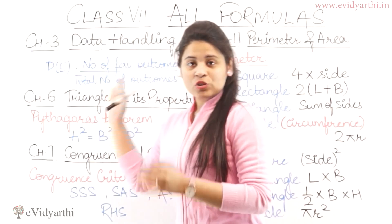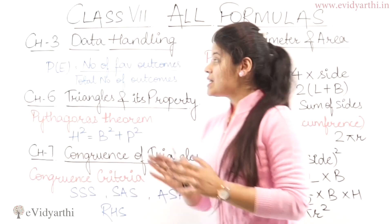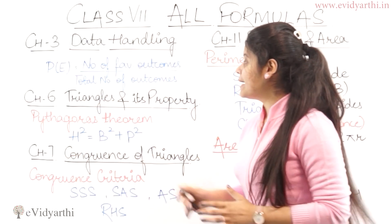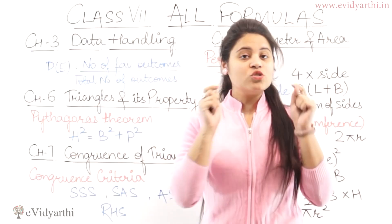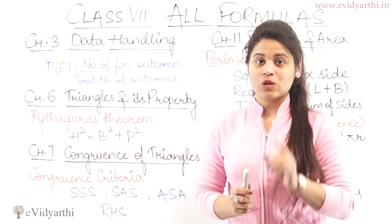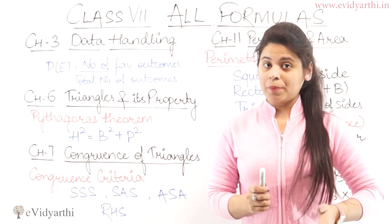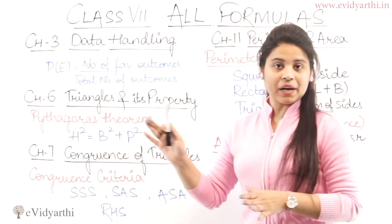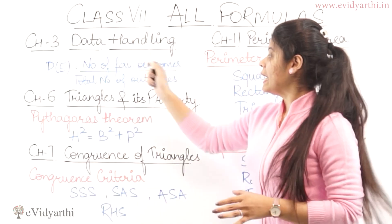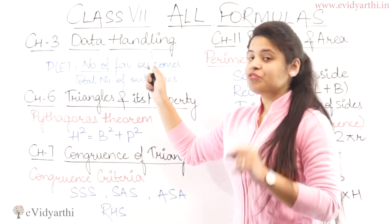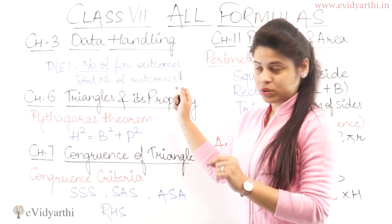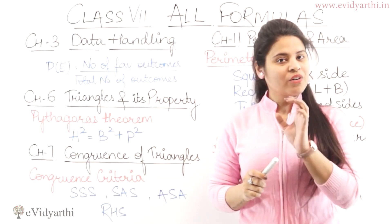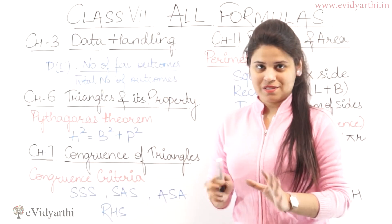Moving to chapter number 3 directly, which is data handling. In data handling you have the last exercise — probability. The probability formula is: number of favourable outcomes upon total number of outcomes.